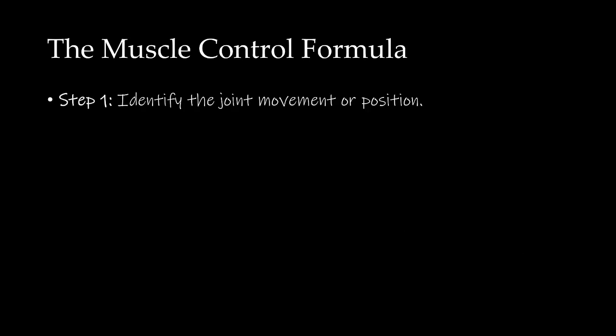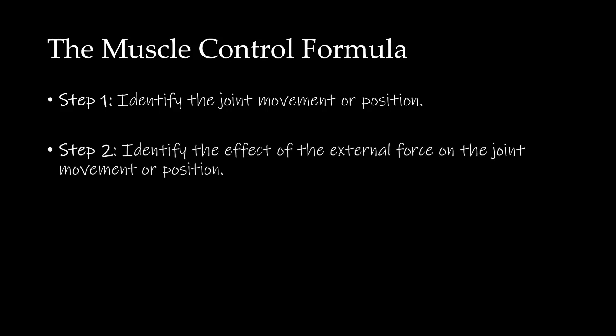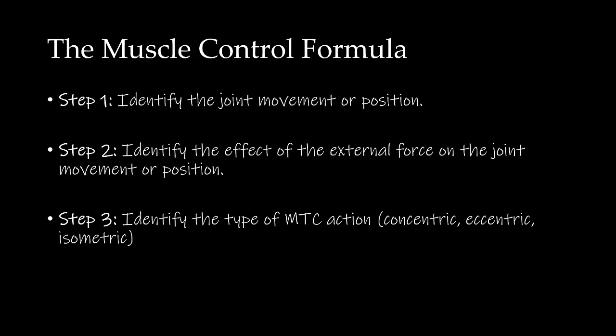Let's review what we did in this example. In Step 1, we identified the joint movement as glenohumeral adduction. In Step 2, we determined that the effect of the external force — gravity — was also to adduct the glenohumeral joint. In Step 3, since the effect of the external force and the joint movement were in the same direction but we were moving slowly, we determined that we had an eccentric MTC action.